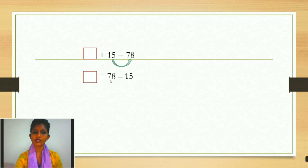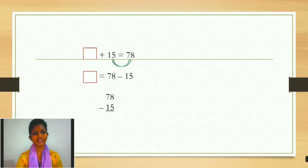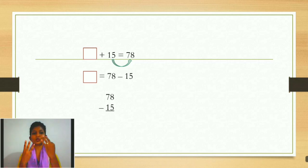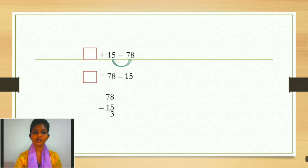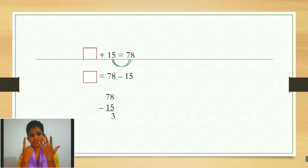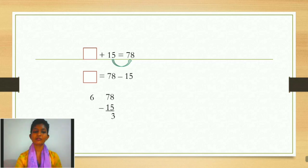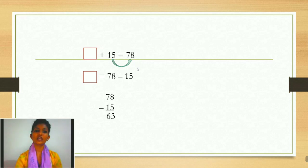Now we have 78 minus 15. We can minus this because 8 is bigger than 5. Starting from the back: 8 minus 5 — 1, 2, 3, 4, 5 — number 3 left. Write 3. Now 7 minus 1 — number 6 left. Write 6. Answer is 63. You can check: write 63 in the box, plus 15, and you will get 78.